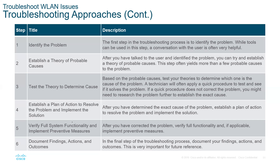But if all clients on the network have issues, the problem is probably the access point. It probably means my settings on the controller have a problem. Those are some of the ways that, with experience, you identify the problem location. In many companies, there are not huge problems — often users just don't know how to connect to the network. Those are some of the ways you can troubleshoot a network.